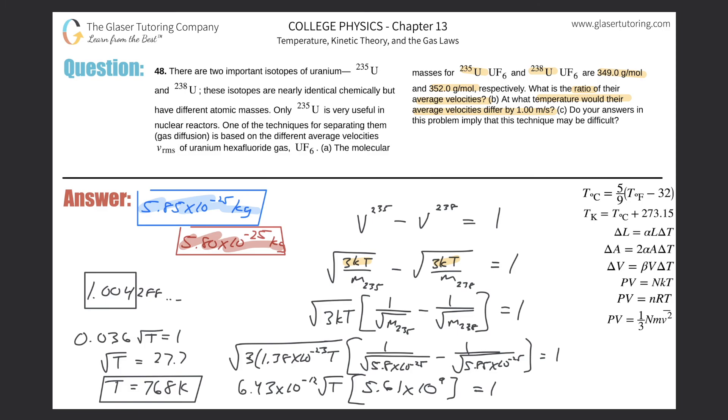And that would be the temperature in which there is a one meter per second difference between the two velocities. Now it says, do your answers to this problem imply that the technique may be difficult? I don't think so. This is a pretty hot temperature, but it's nothing that we cannot make here on earth and do in a lab, so I think it sounds reasonable. Alright guys, thanks for tuning in, appreciate it very much. Please help us out and subscribe. See you next time.